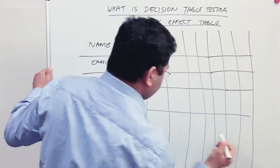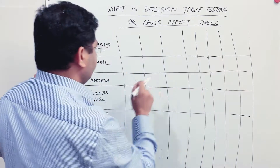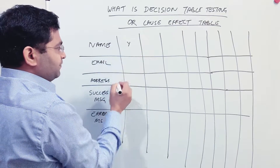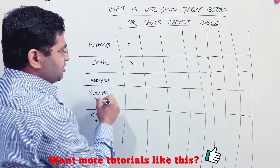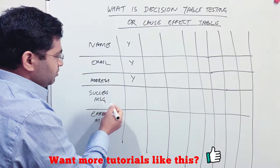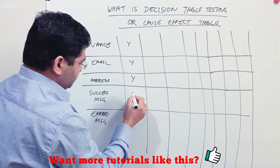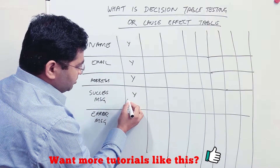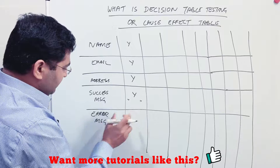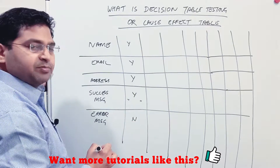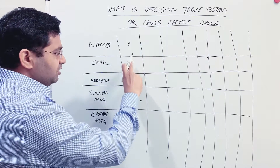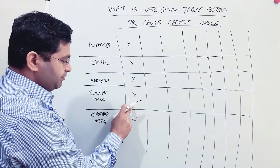In the first case, the customer has provided name, email, and address — all present. In this case the customer should get a success message, and the error message should not be displayed, because all mandatory fields have been provided and registration should be successful.